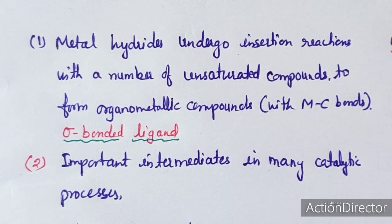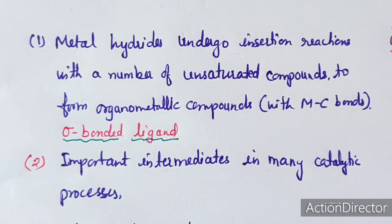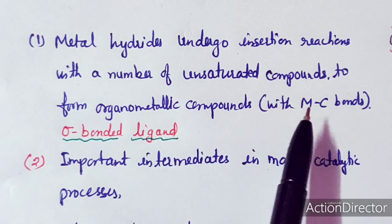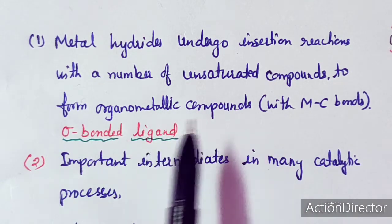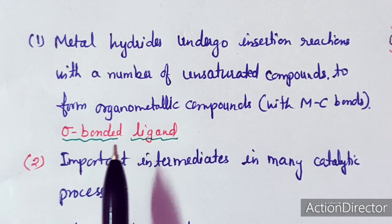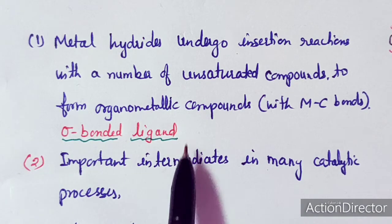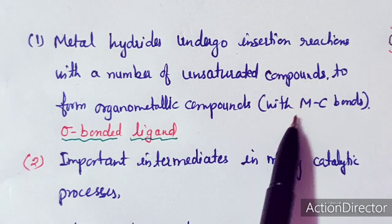Metal hydrides are compounds having an M–H bond. It was recognized quite late, in the 1950s, that there is a bond between M and H in metal hydrides. Metal hydrides undergo insertion reactions with a number of unsaturated compounds to form organometallic compounds. These hydride ligands are generally sigma-bonded ligands.